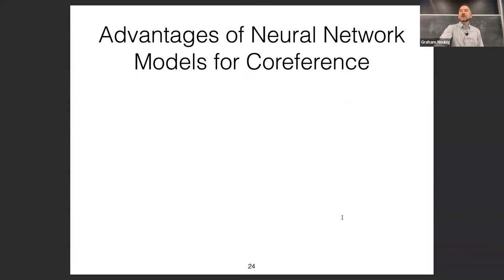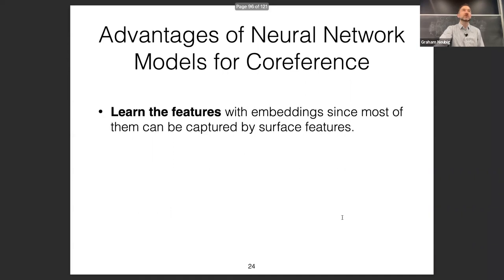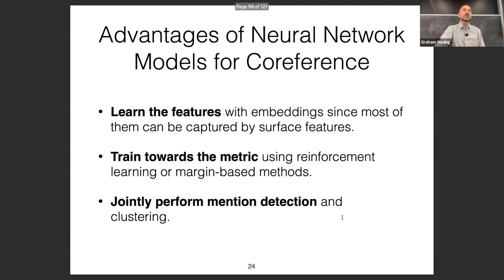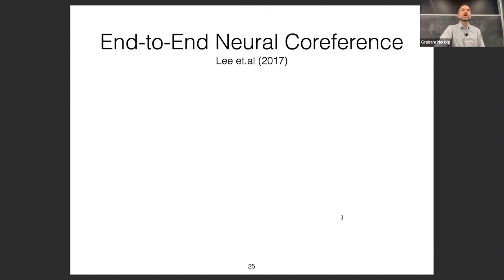Neural models revolutionized co-reference — it's one of the problems that only became feasible after neural models emerged. Advantages include learning features via embeddings, training toward metrics using reinforcement learning, and jointly performing mention detection and clustering. The paper by Lee et al., which won Best Paper at ACL 2017, is a great template for other structured prediction problems — worth reading even if you're not specifically interested in co-reference.